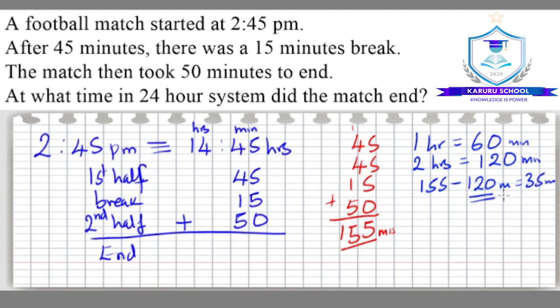So we have already subtracted 2 hours. And therefore, on the column that has minutes, we will write 35. And then we have subtracted 2 hours. So we will carry forward 2 hours and then add those 2 hours to 14 to get 16. So the match ended at 1635 hours.